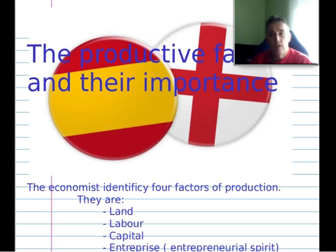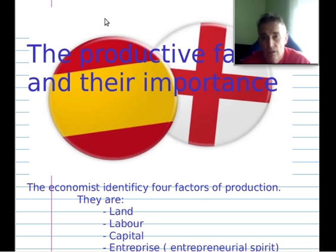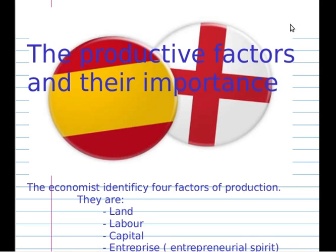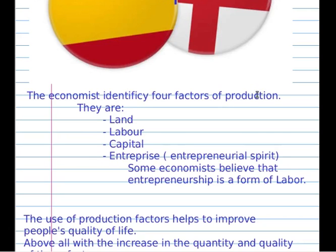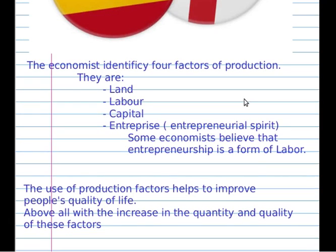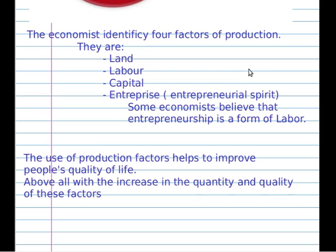First of all I will tell you about the land and natural resources. Let's go. The economist identifies four factors of production: they are land, labor, capital and enterprises. The entrepreneurial spirit is all about enterprises. Some economists believe that enterprises are a type of labor.